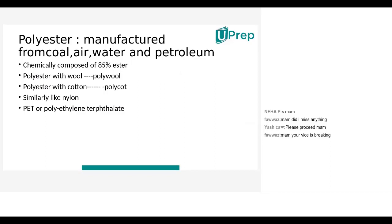Next: polyester. Polyester is a kind of synthetic fiber. It contains small amounts of coal, air, and water, but is mainly composed of petroleum. It is chemically composed of 85% ester, which is why it is considered a completely synthetic fiber. The higher percentage — 85% ester — is what defines its classification.